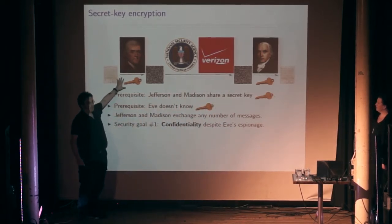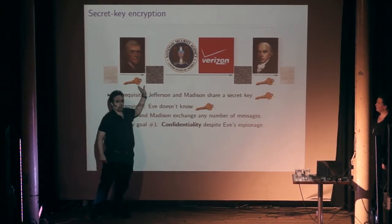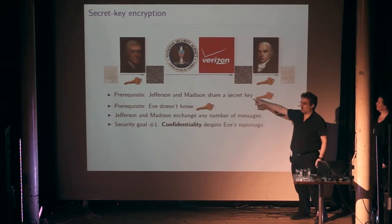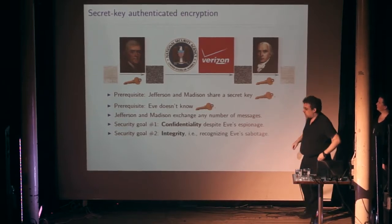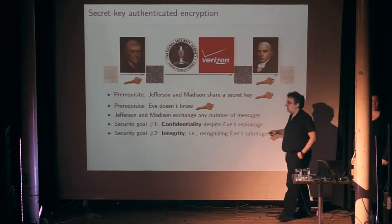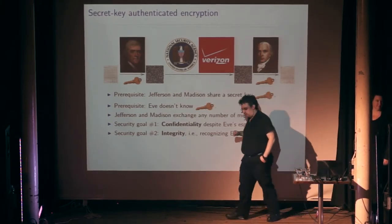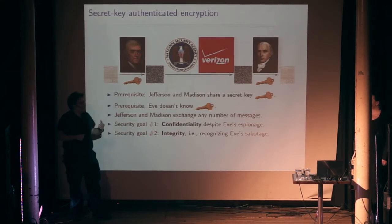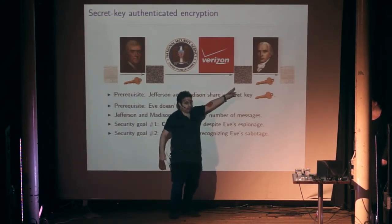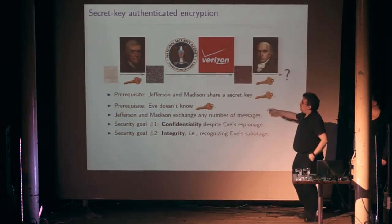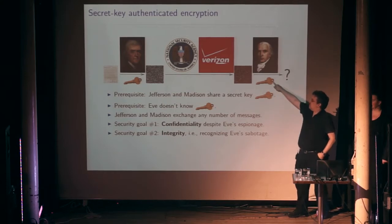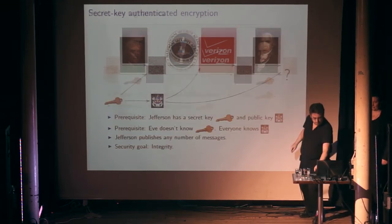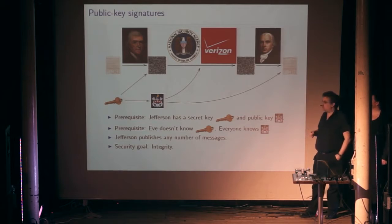The main goal is confidentiality — eavesdroppers can't figure out what message was sent, though they might see metadata like timing or recipient. There's also integrity: if the NSA wants to change the message Jefferson is sending, that could do quite a lot of damage. Integrity means that if the eavesdropper changes the message, the key will detect it and Madison will know the message is not legitimate.